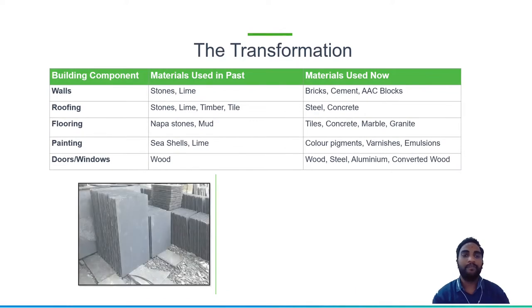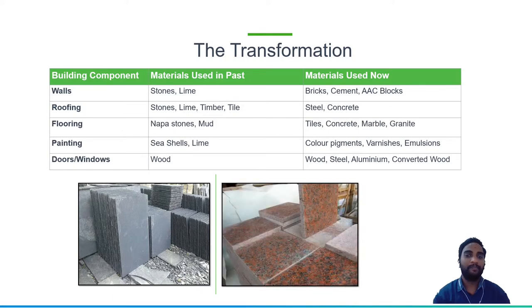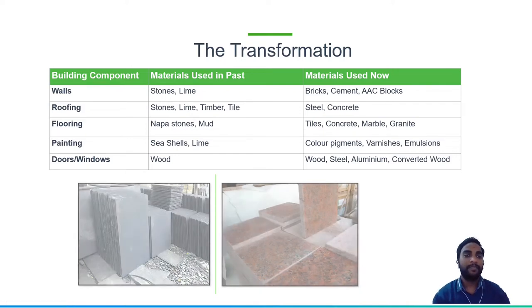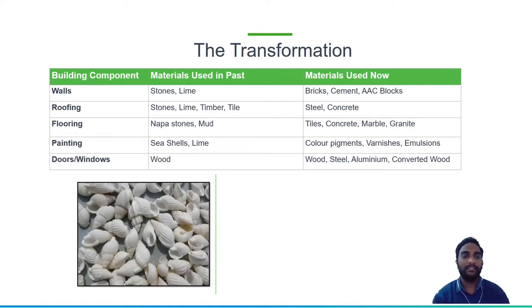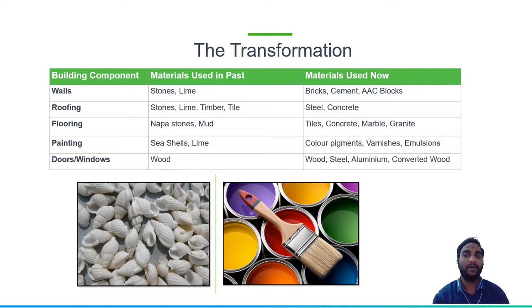For flooring, they used to have either mud or napa stones — called naparaya in Telugu. Now we use tiles, concrete, marble, and granite. For paints, in the olden days they used seashells: they would heat and rake them and apply as a mortar, which served as paint. Now we have many colored pigments, varnishes, emulsions, and tractor emulsions. These improvements in paints have enhanced the quality of building materials.